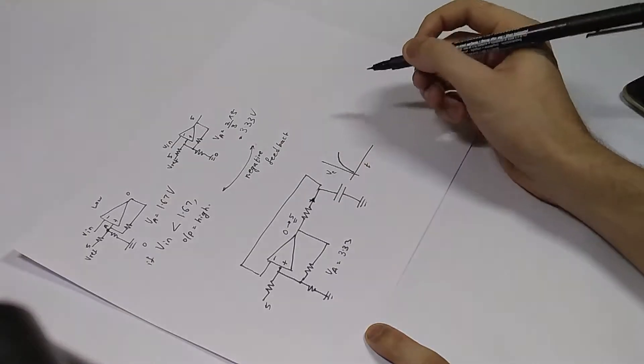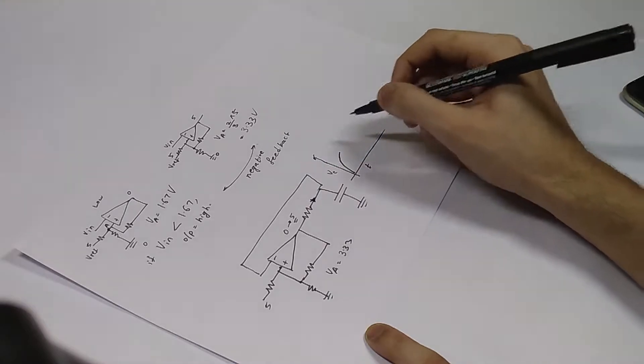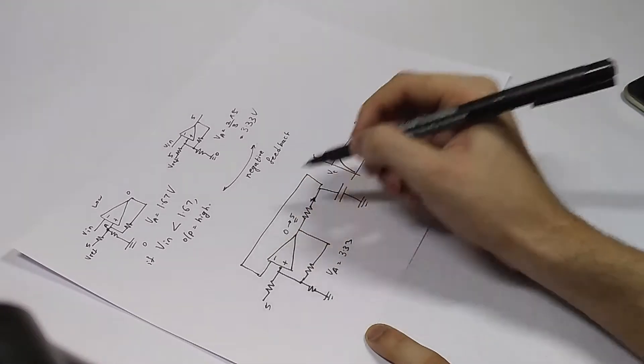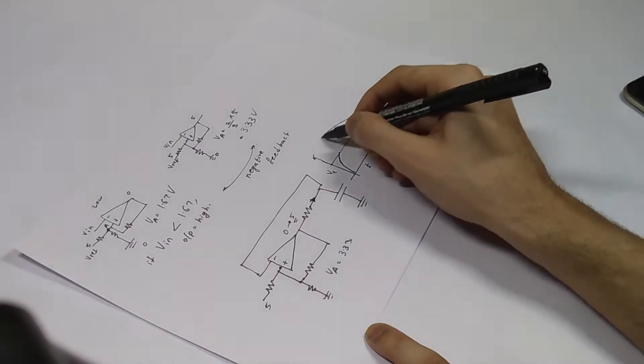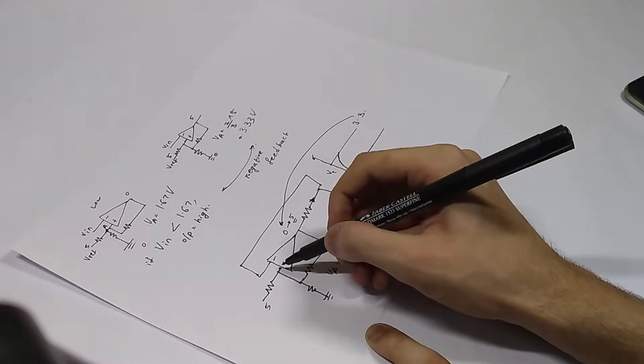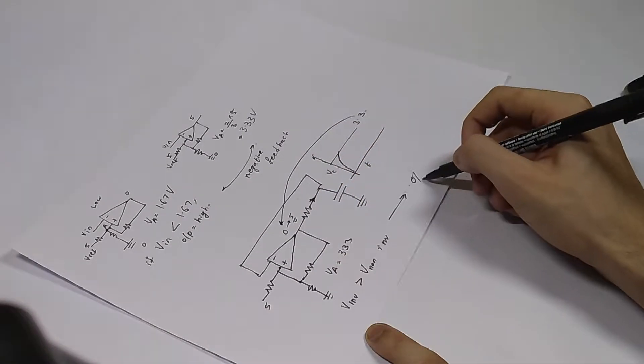After the circuit is powered on, the capacitor will start charging through the given resistor. Once it reaches a trigger voltage of 3.33 volts, the voltage at the inverting input would go higher than the non-inverting input.